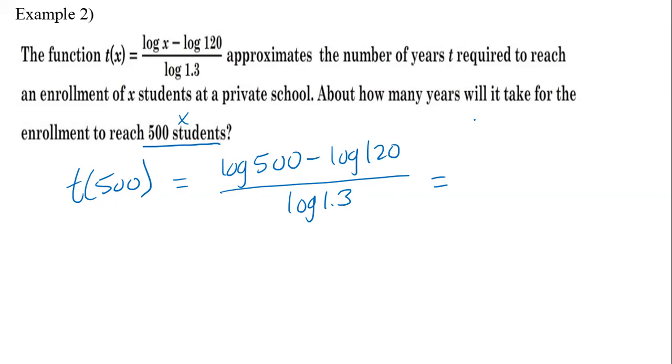Okay, if I want to have less to plug in, I can simplify the numerator. And I could have log of 500 over 120 over log 1.3. If I want to simplify it even more, I can have log of 25.6 over log 1.3.